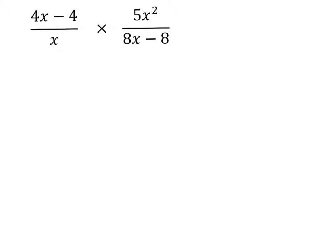This problem deals with multiplying rational expressions. The problem is 4x minus 4 over x, multiplied by 5x squared over 8x minus 8.